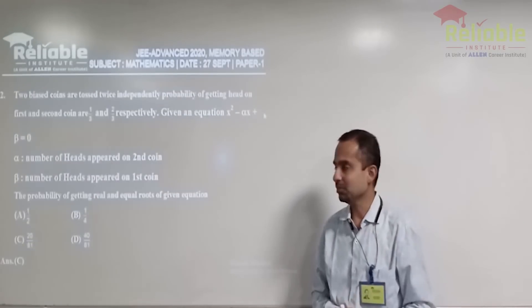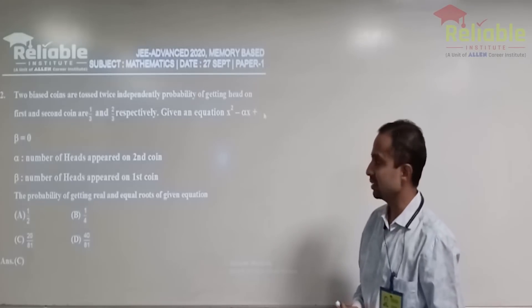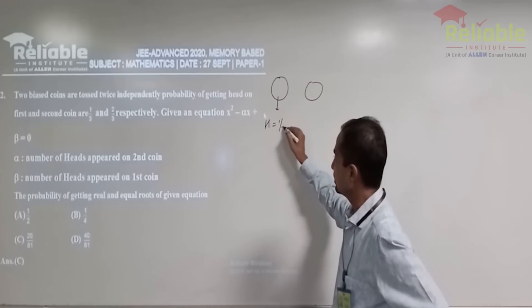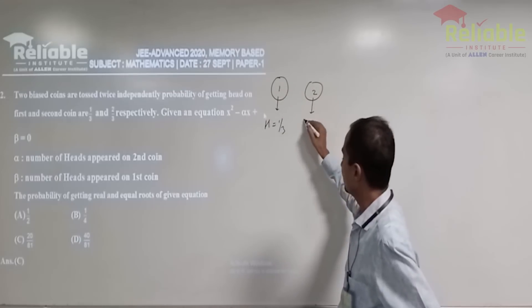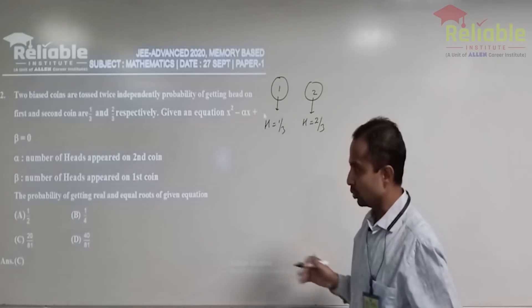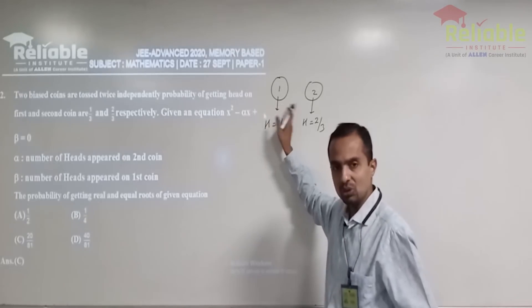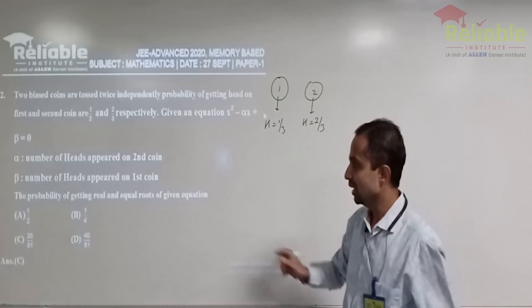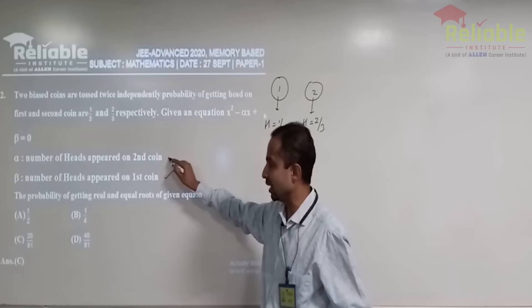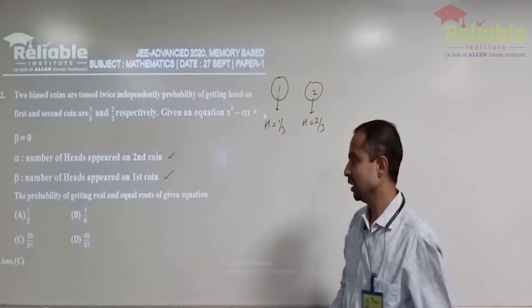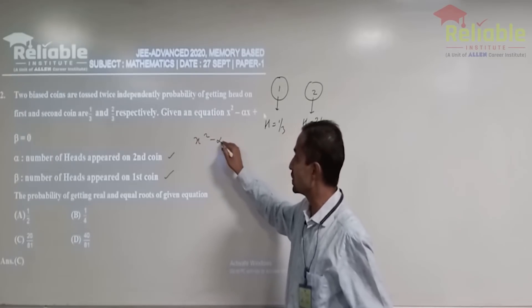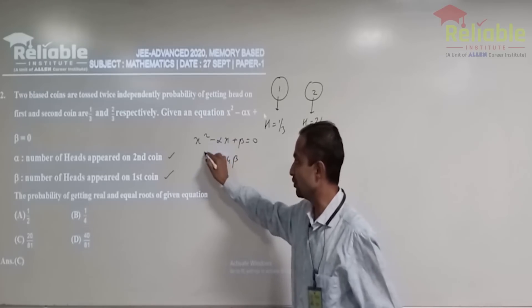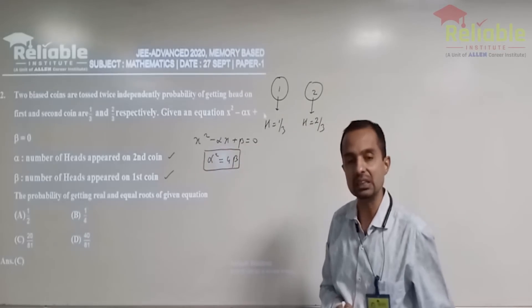Let me begin with the second problem. This is from probability and the problem states that there are two coins. So this is coin 1, this is coin 2. Probability of obtaining head here is 1 by 3 and this is coin 2. And the probability of obtaining head here is 2 by 3. The question states that we are tossing both coins two times. This is toss 2 times, this is toss 2 times and number of heads are observed.